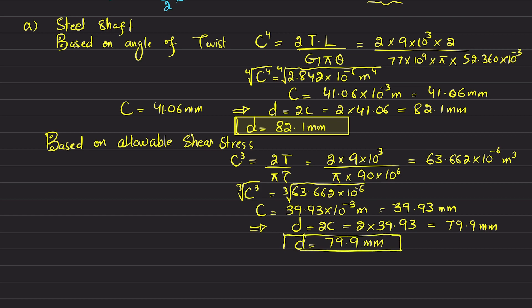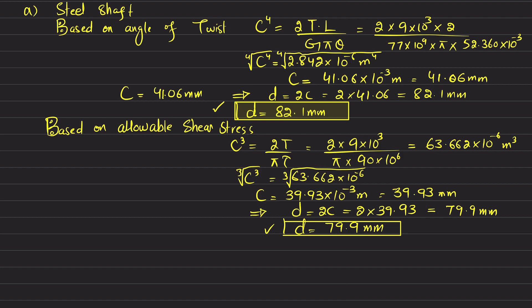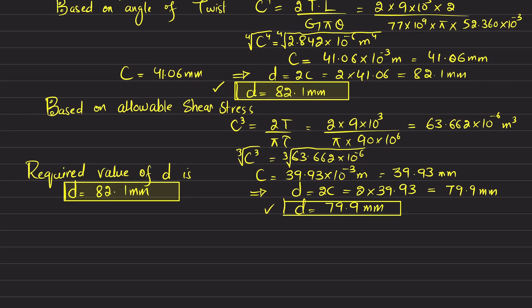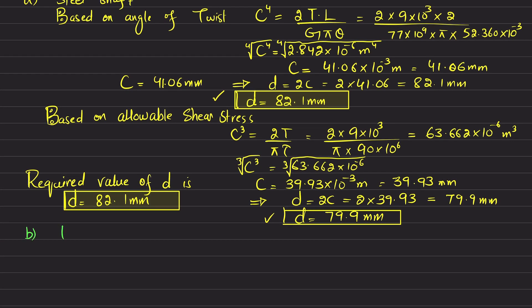We now have two diameters: 82.1 mm based on angle of twist and 79.9 mm based on allowable shearing stress. The required diameter D is selected as 82.1 mm — the larger value — because it represents the safer design satisfying both constraints.